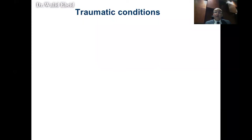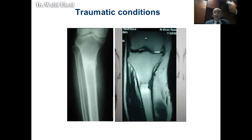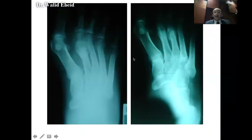Traumatic conditions as well could mimic bone tumors. This patient has a painful upper tibia without a specific trauma history. You can see sclerosis here — you could miss it for an osteoid osteoma, and it's hot on bone scan. But the MRI revealed the fracture line; this is a stress fracture. Another form of stress fracture with callus around could be mistaken for a periosteal tumor — it's pure callus.